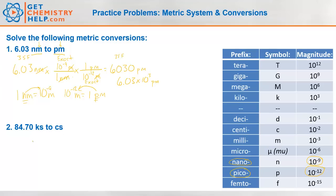Let's look at 84.70 kiloseconds going to centiseconds. So 84.70 kiloseconds — we're trying to go to centiseconds. Kiloseconds and centiseconds both have seconds in common, so we're going to have to go from kiloseconds to seconds, and then seconds to centiseconds.